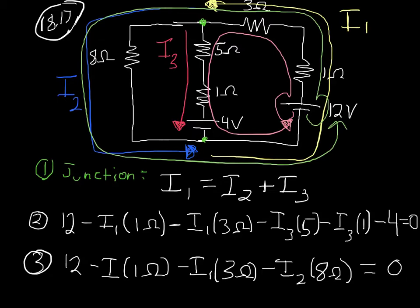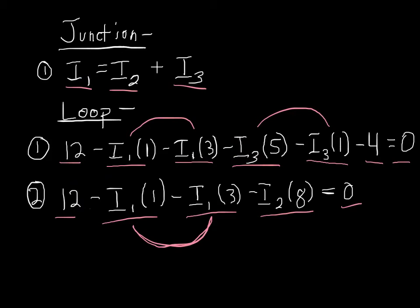I have three equations and three unknowns: my junction rule, and my two loops. That's all the physics — now I need to start doing algebra to find what I1, I2, and I3 are. I've rewritten all the equations we already found and need to combine these. I know the relationship I1 = I2 + I3, and I know the first and second loop equations. I can simplify the loops because the first loop has two I1 terms and the second loop has two I3 terms — I can combine those.